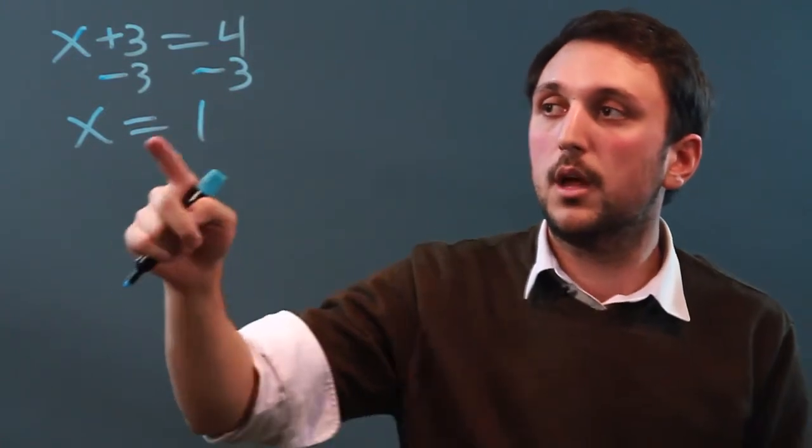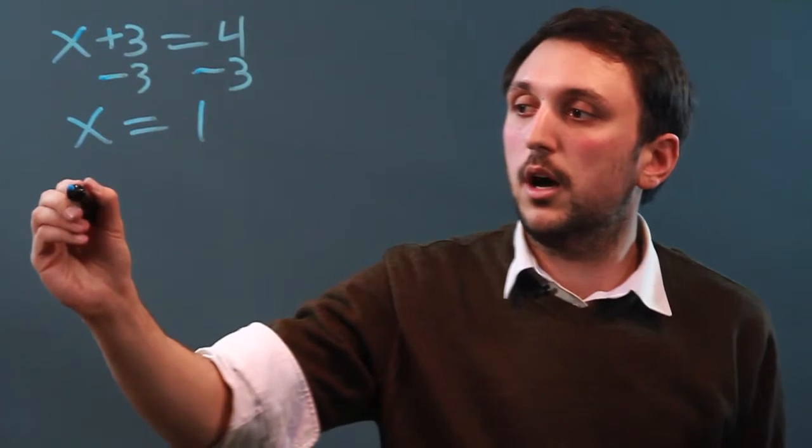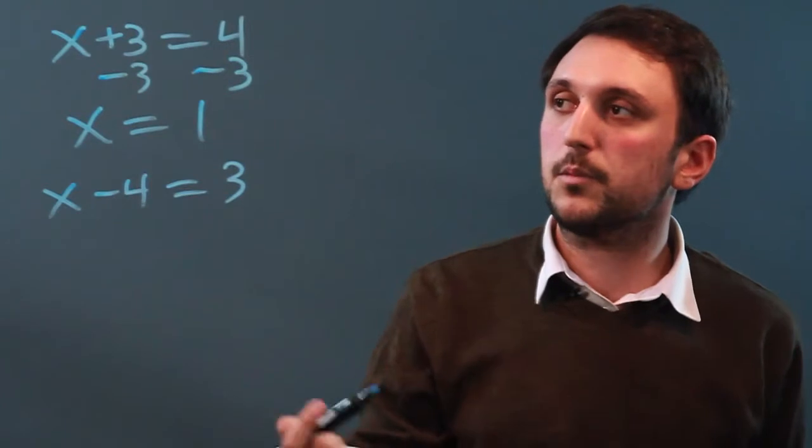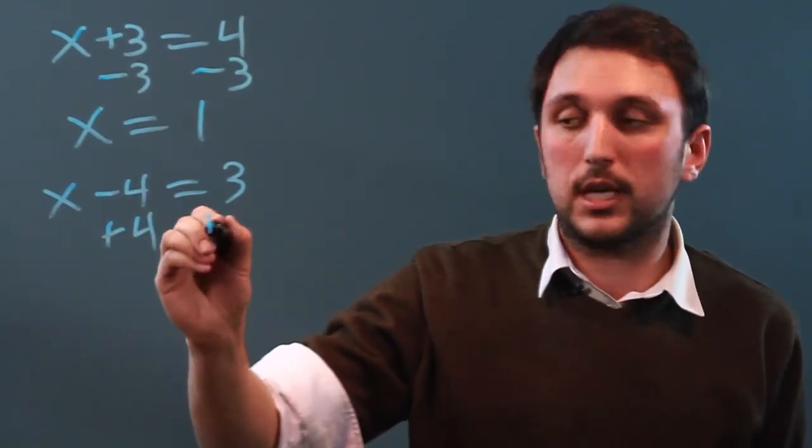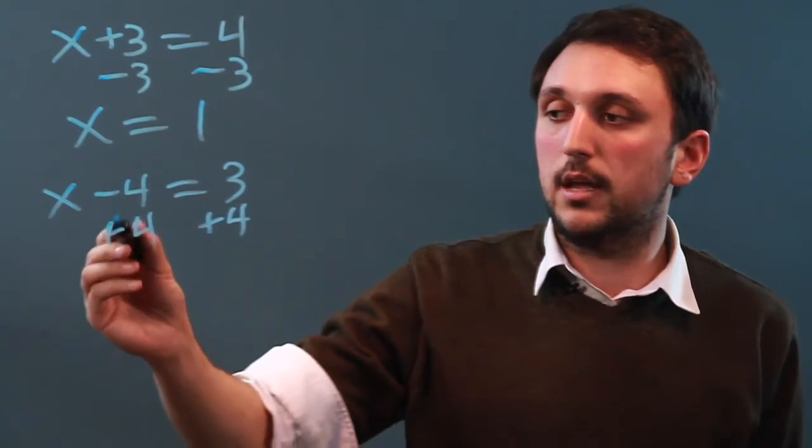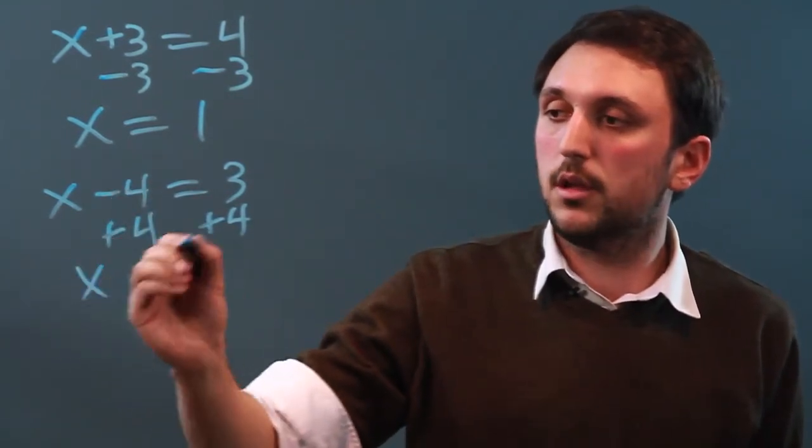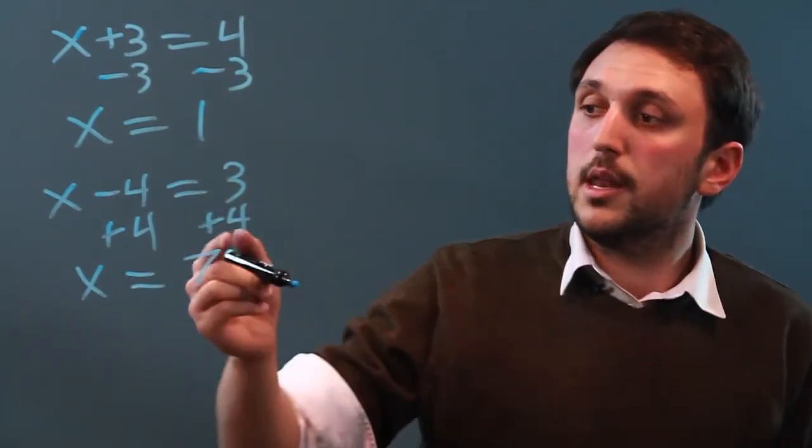Now, if we were to go the other way, let's say it was x minus 4 equals 3. Well, then we would say add positive 4 to each side. And in this case, it would cancel out again, so x equals 3 plus positive 4 is 7.